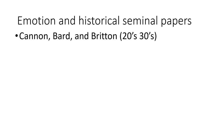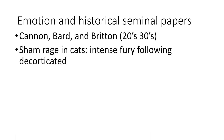Cannon, Bard, and Britton in the 1920s and 30s did a series of research on where emotions come from using cats. They also did experiments where they removed the cortex of a cat and still observed that the cats would express intense fury — this was called sham rage. Because the cats demonstrated emotions without a cortex, Cannon and Bard would not have thought that emotions come from cognitions.